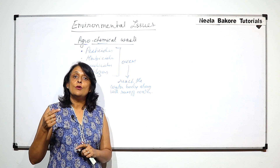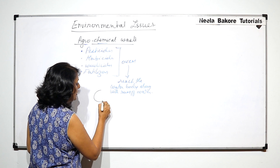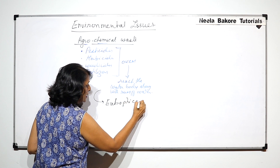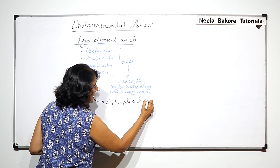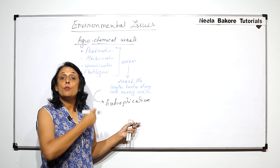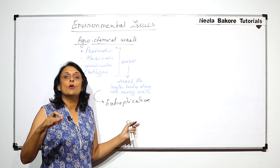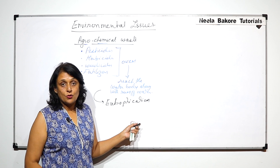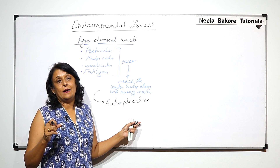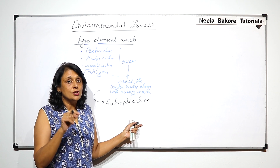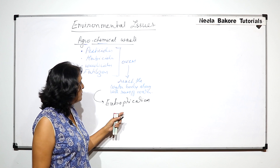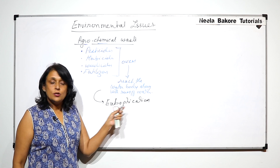This also results in eutrophication — that is, the aging of a water body. There is a natural process which is very slow, where a lake or water body becomes shallower due to its aging process. But our contribution speeds up this eutrophication process, which is called cultural eutrophication or accelerated eutrophication.